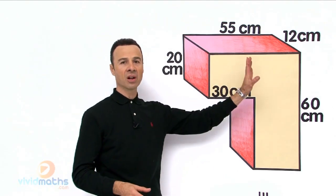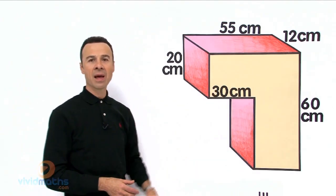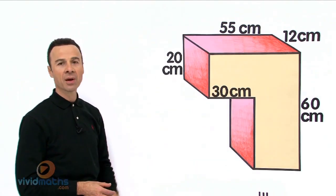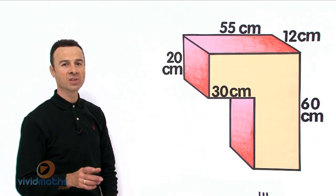So we are looking for this volume of this kind of like upside down L kind of shape and it has got a bit of a depth and it has got a bit of a height but there is a missing length.